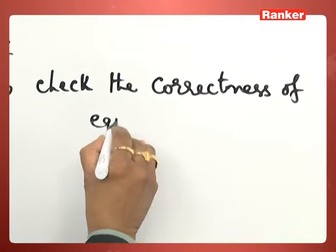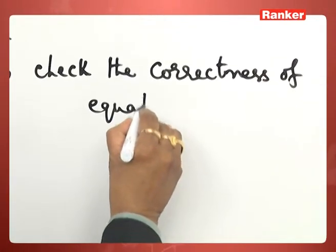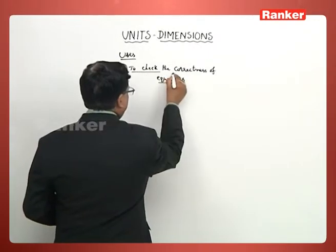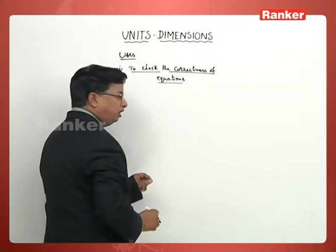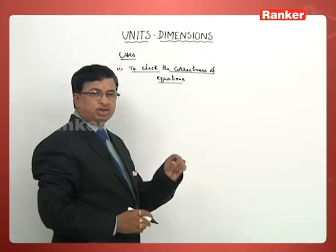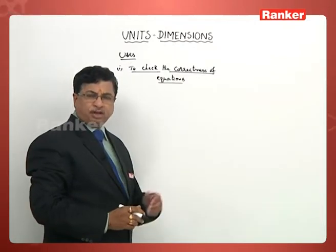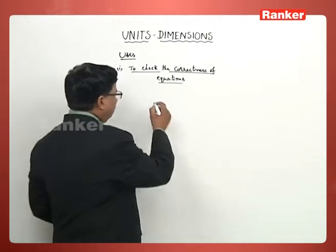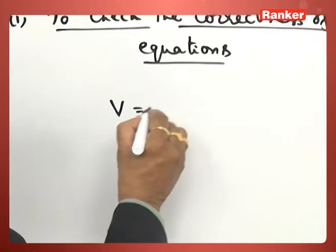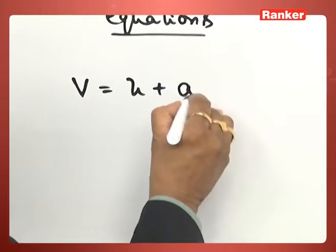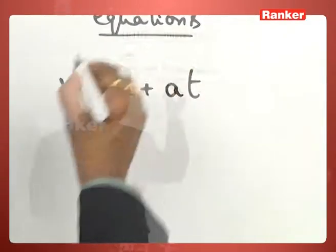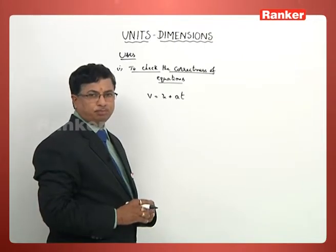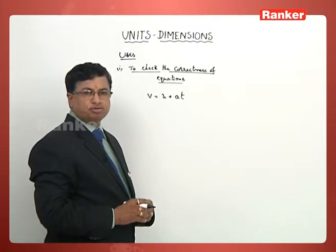Correctness of equations — whether the given equation is dimensionally correct or not, we can check it. Let us take some known equations. We know v is equal to u plus at, which is one of the equations of motion from one-dimensional motion of a body.